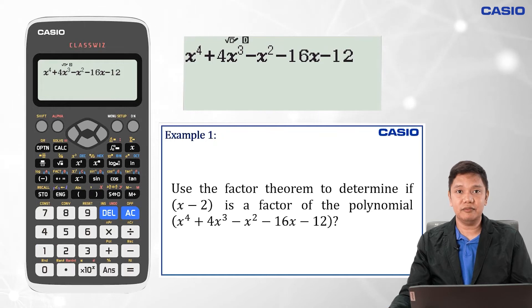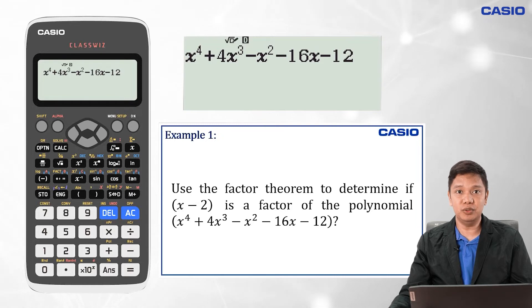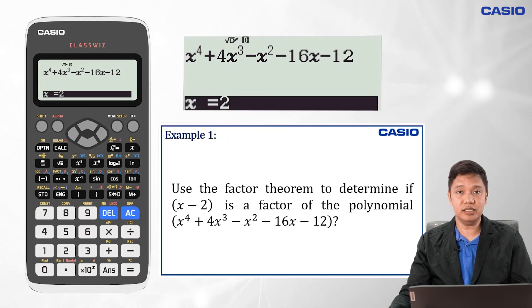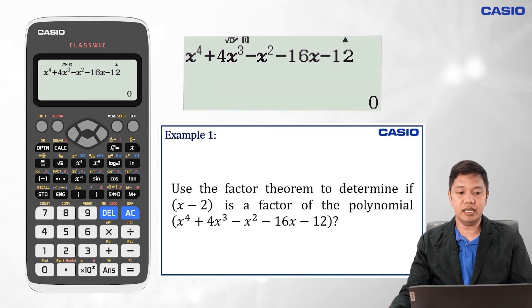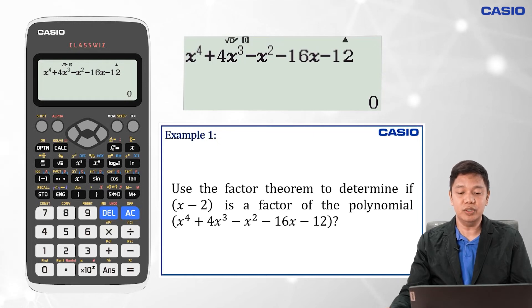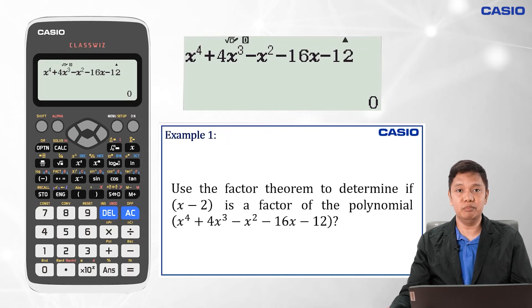To test for the remainder at x equals positive 2, press Calculate, then enter 2 for the value of x, press Equals, and pressing Equals again we can see that the remainder is zero. By the Factor Theorem, since the remainder is zero, we can say that the binomial x minus 2 is a factor of the polynomial x to the fourth plus 4x cubed minus x squared minus 16x minus 12.